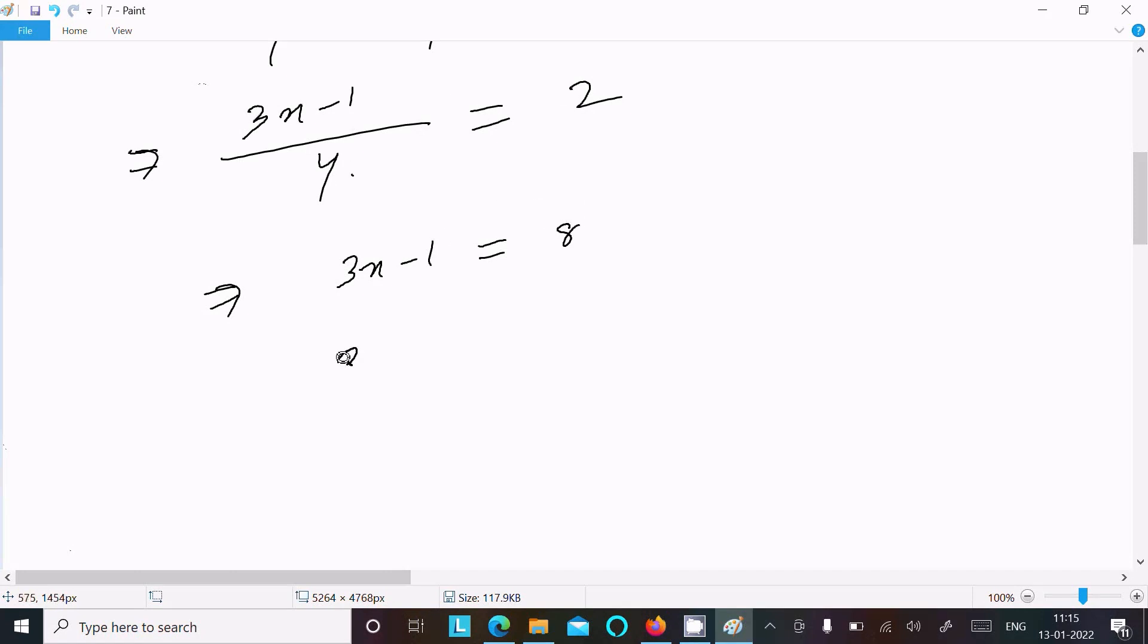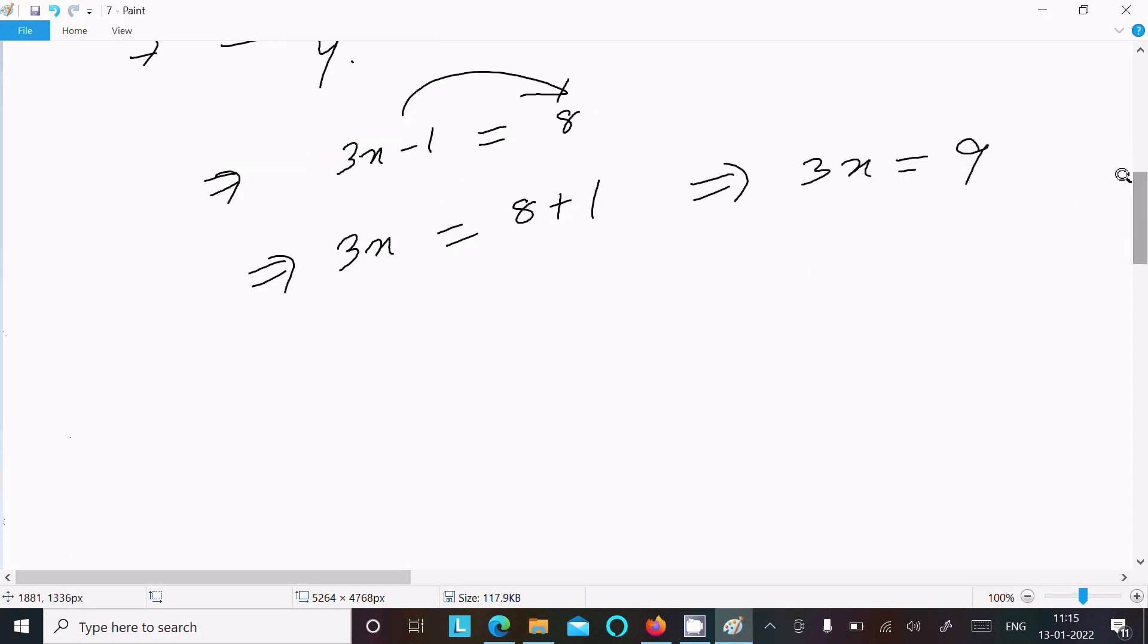If you multiply, this is 8, so 3x = 8 + 1. This one is moving to the right side, so here you can get 3x = 8 + 1 = 9.